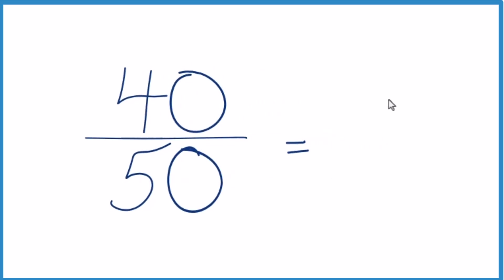40 divided by 10, that's 4. 50 divided by 10 is 5. When we simplify the fraction 40/50 down to lowest terms, we get 4/5.